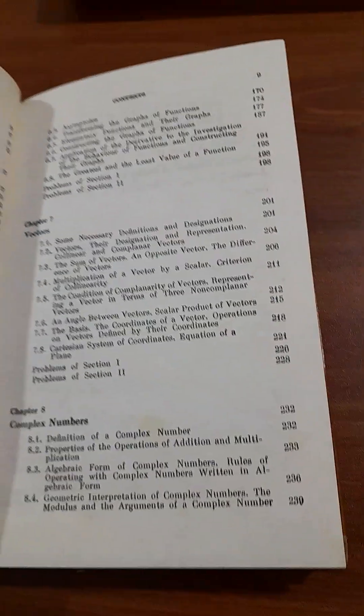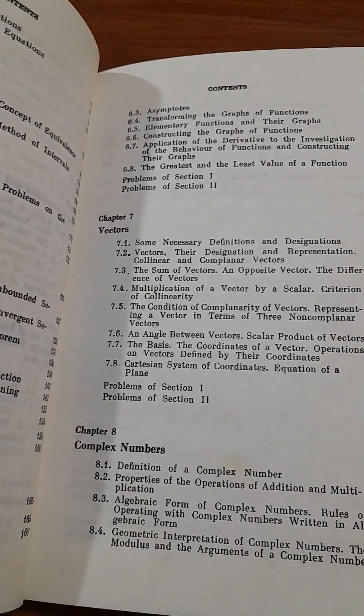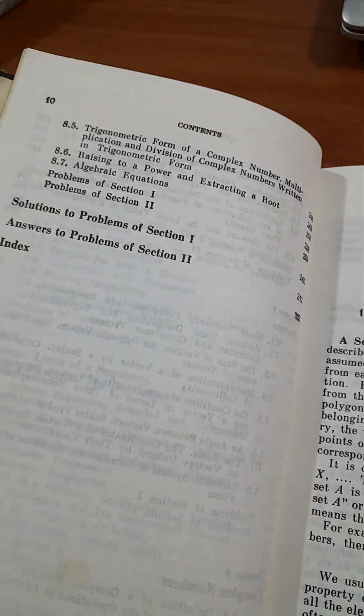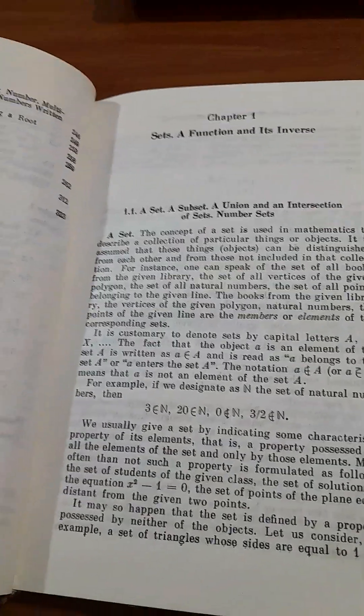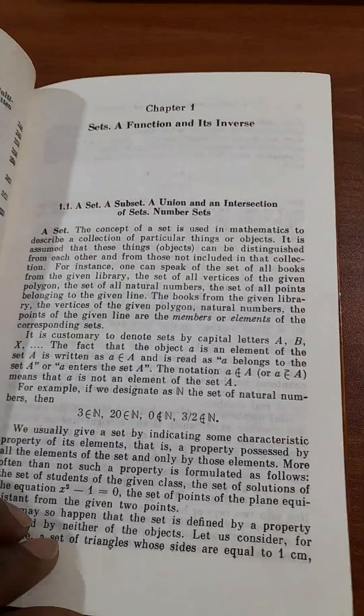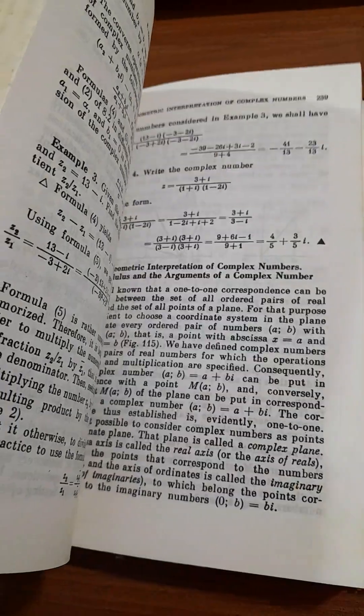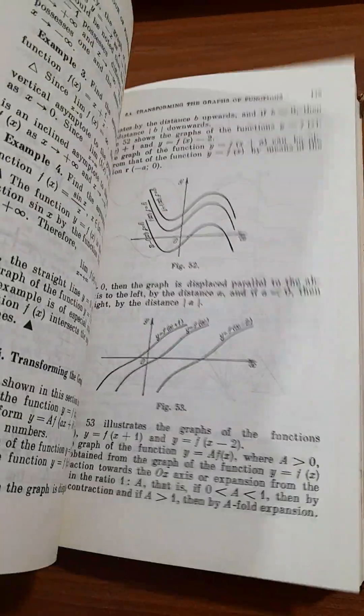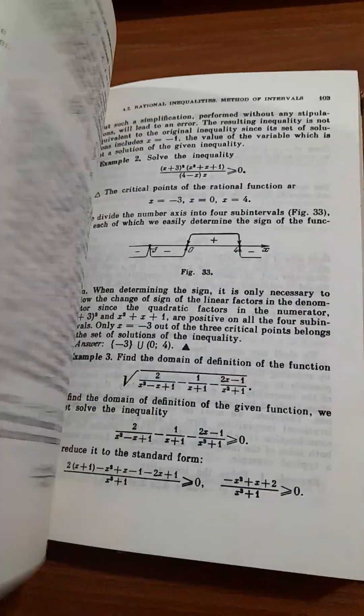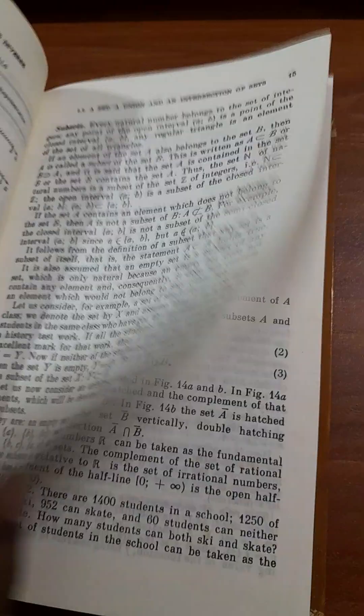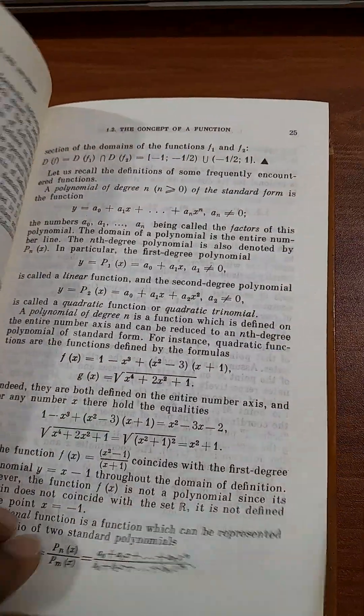Chapter seven, vectors, chapter eight, complex numbers. We will go through the book briefly. As you can see, this book is pretty rigorous for high school. That's why it is so interesting. This book is completely detail-oriented.